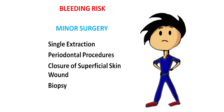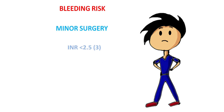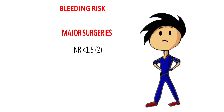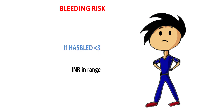Minor surgery — such as single extraction, periodontal procedures, closure of superficial skin wounds, biopsy, etc. — requires INR to be below 3, or below 2.5 according to some guidelines. For major surgery, it needs to be below 1.5 or 2. If a patient's HAS-BLED score is below 3 and INR is in range, mostly in cases of minor surgery, there is no need to stop warfarin. Local hemostatic measures should be implemented instead.